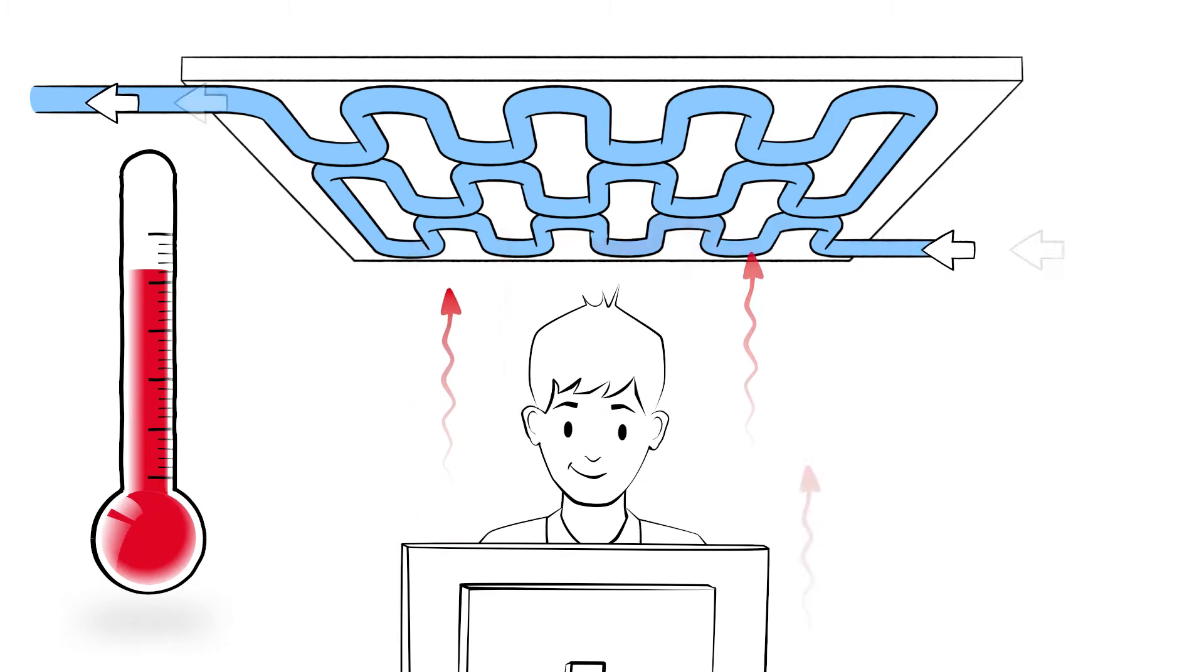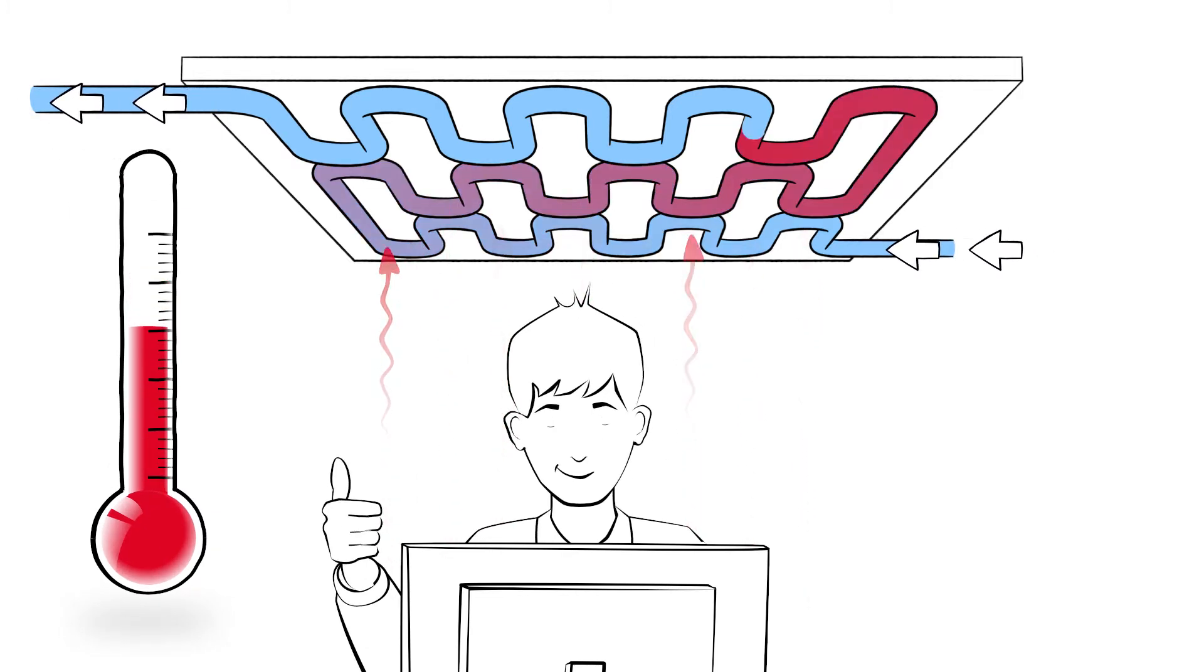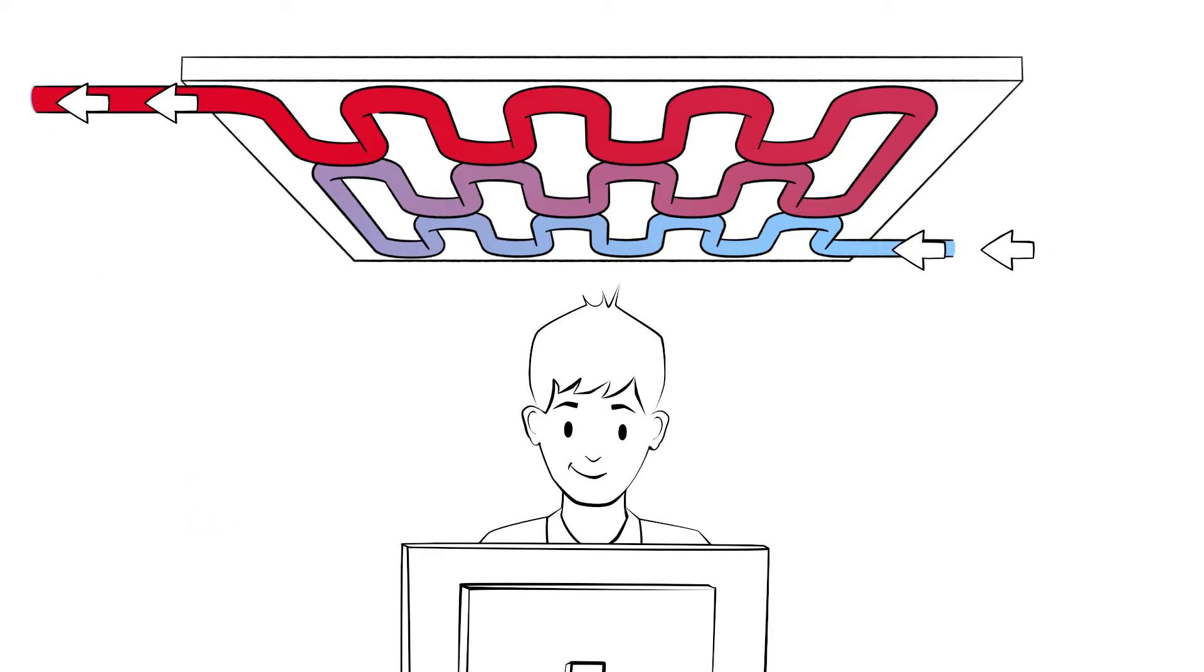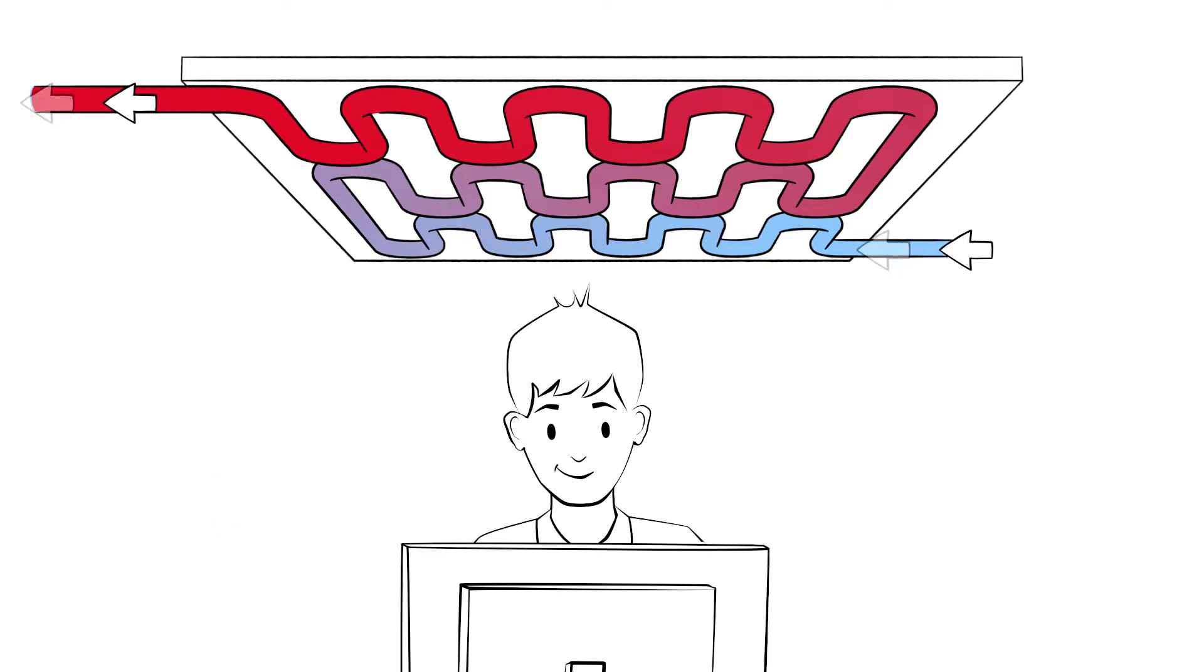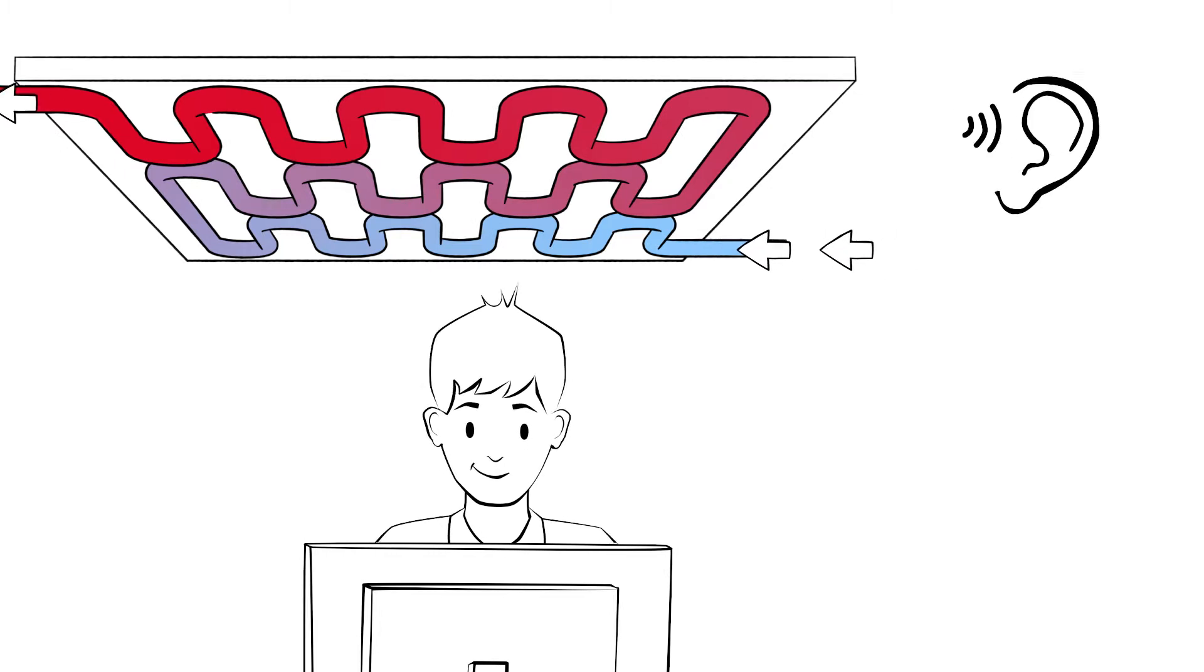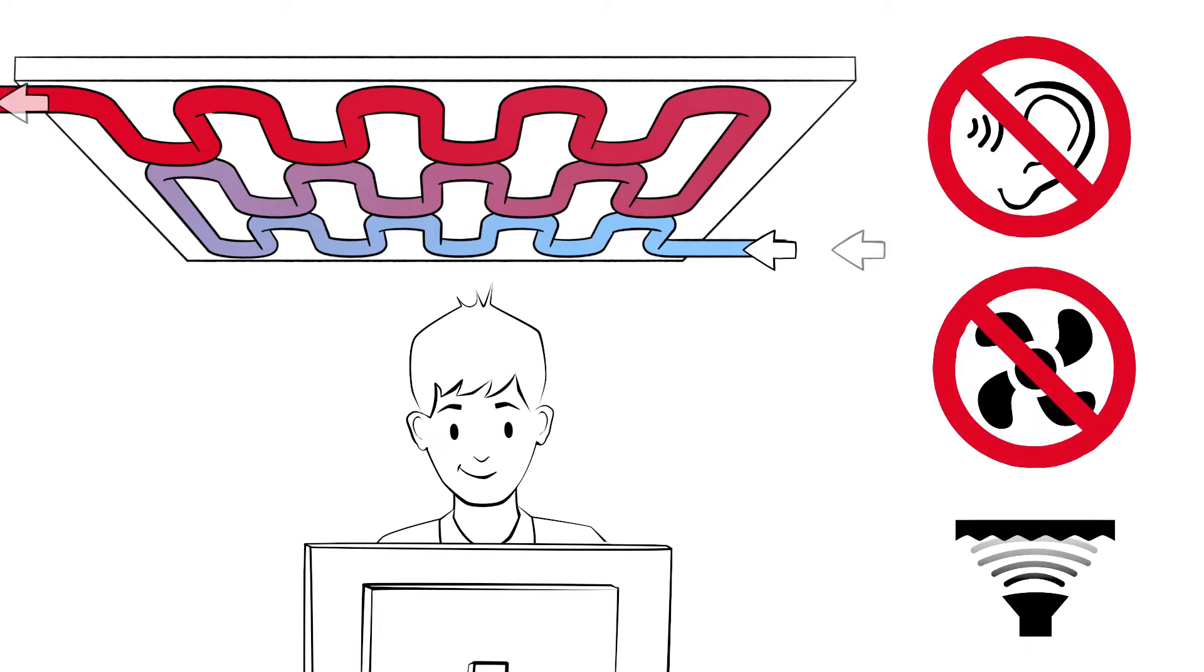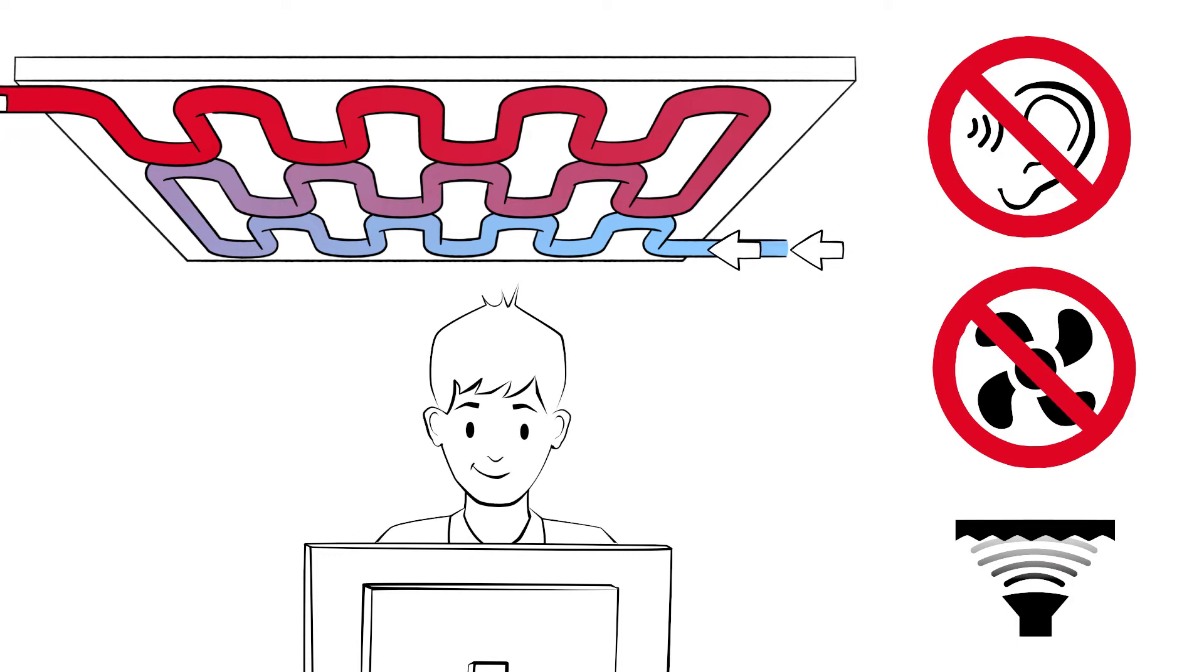Electronic devices, objects and surfaces. The surface temperatures drop and the space becomes pleasantly cool, all without noise or draughts. The sound absorbing effect of the cooling ceiling increases comfort levels further to create a healthy indoor climate.